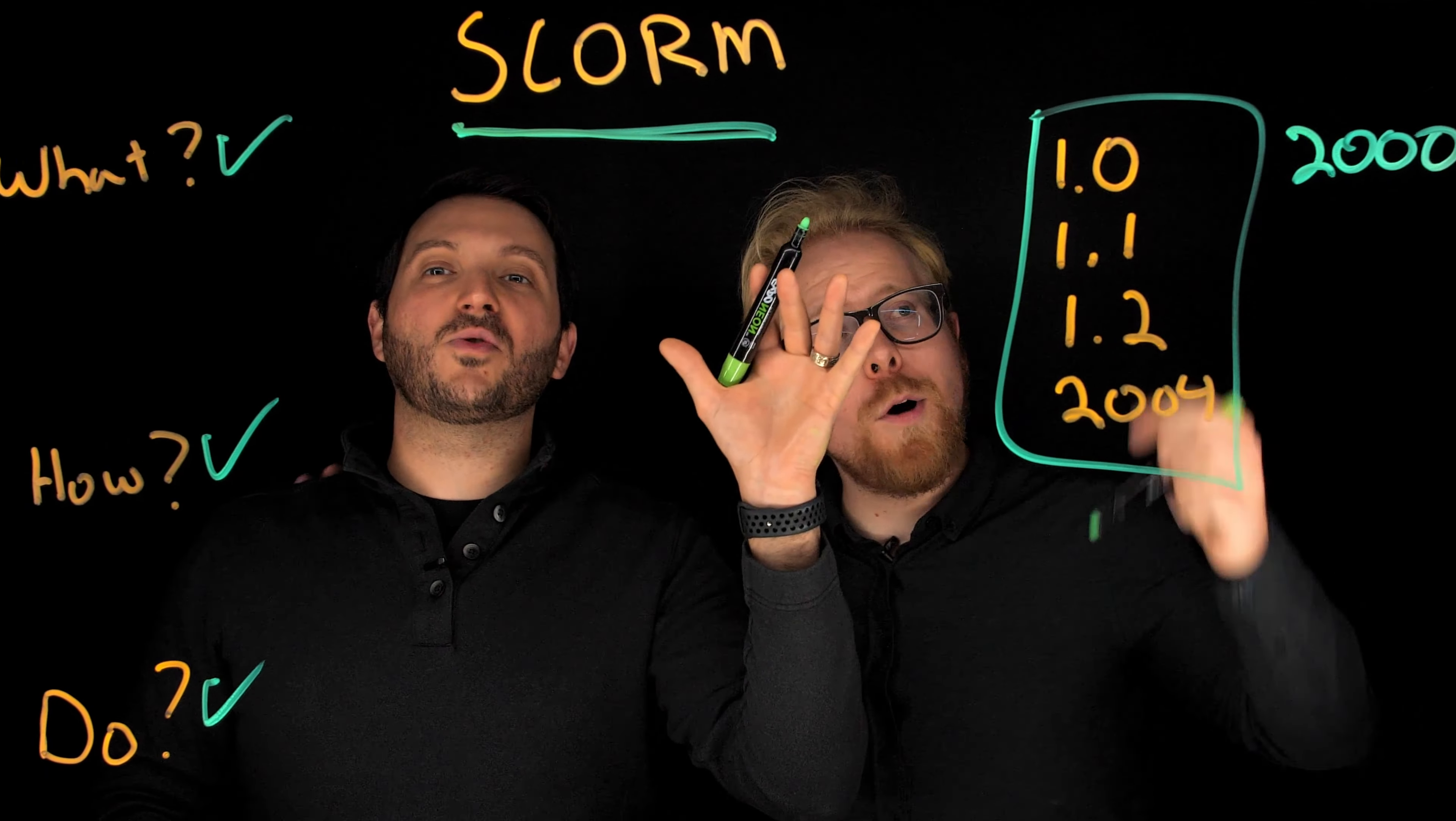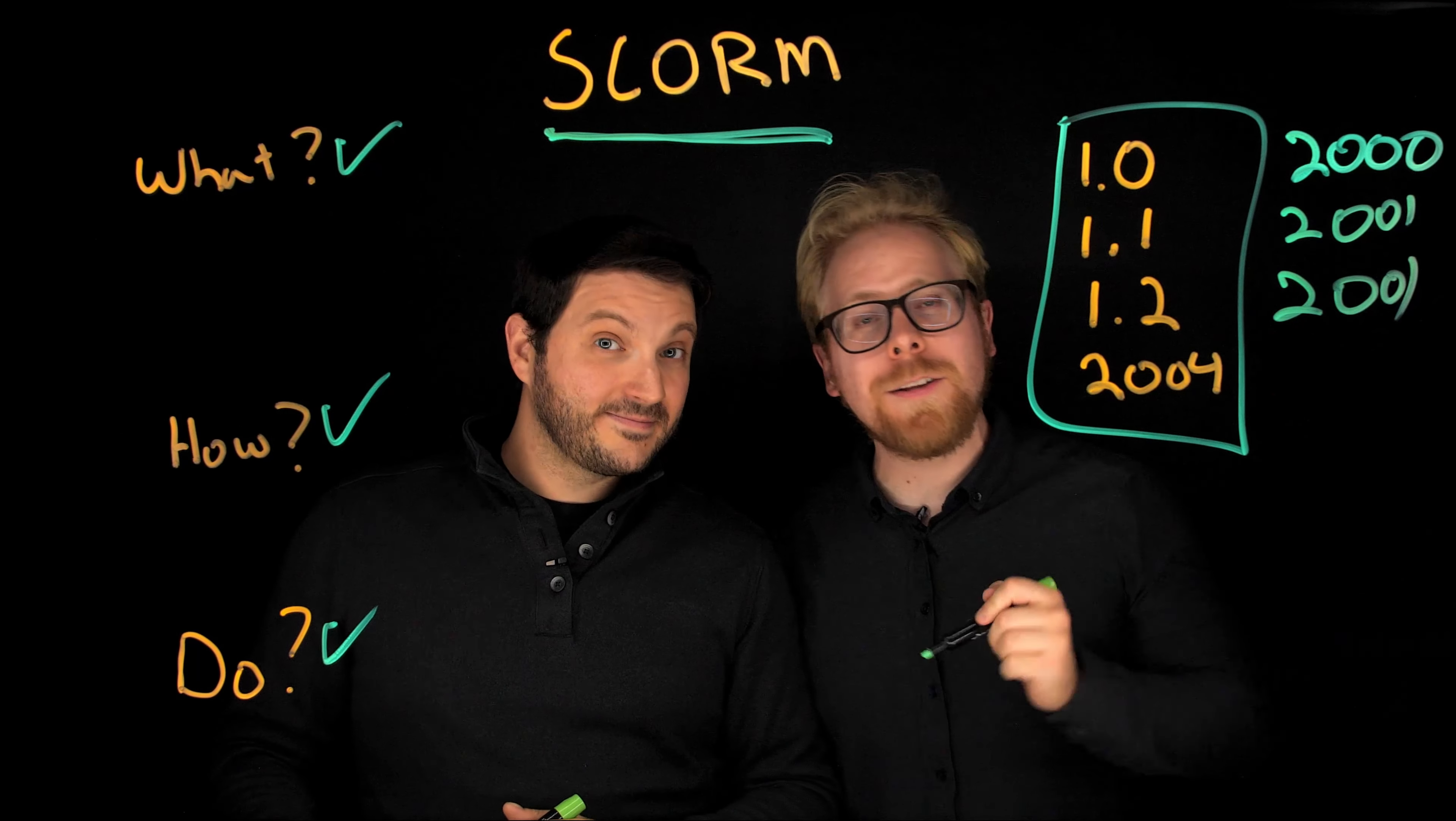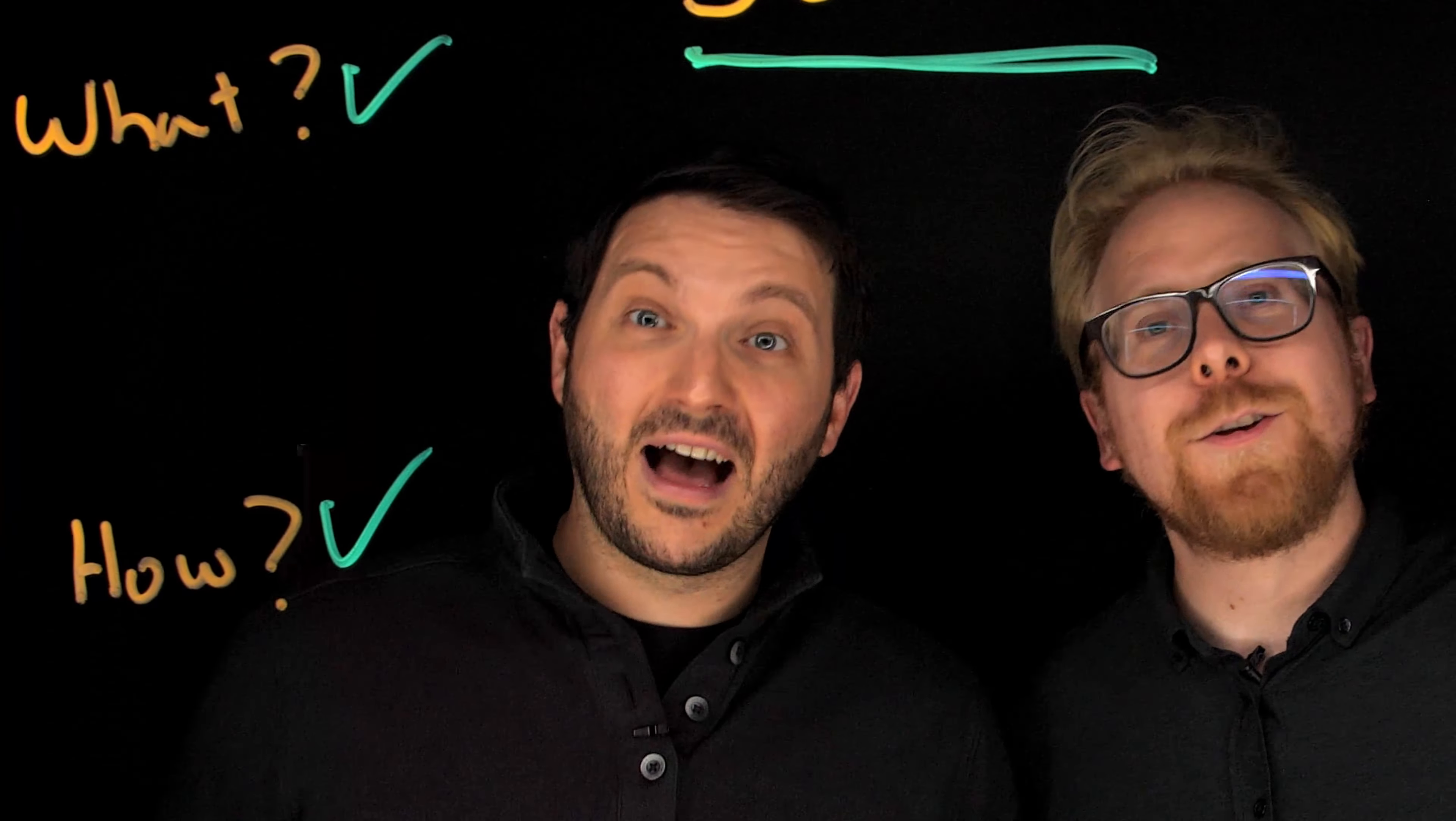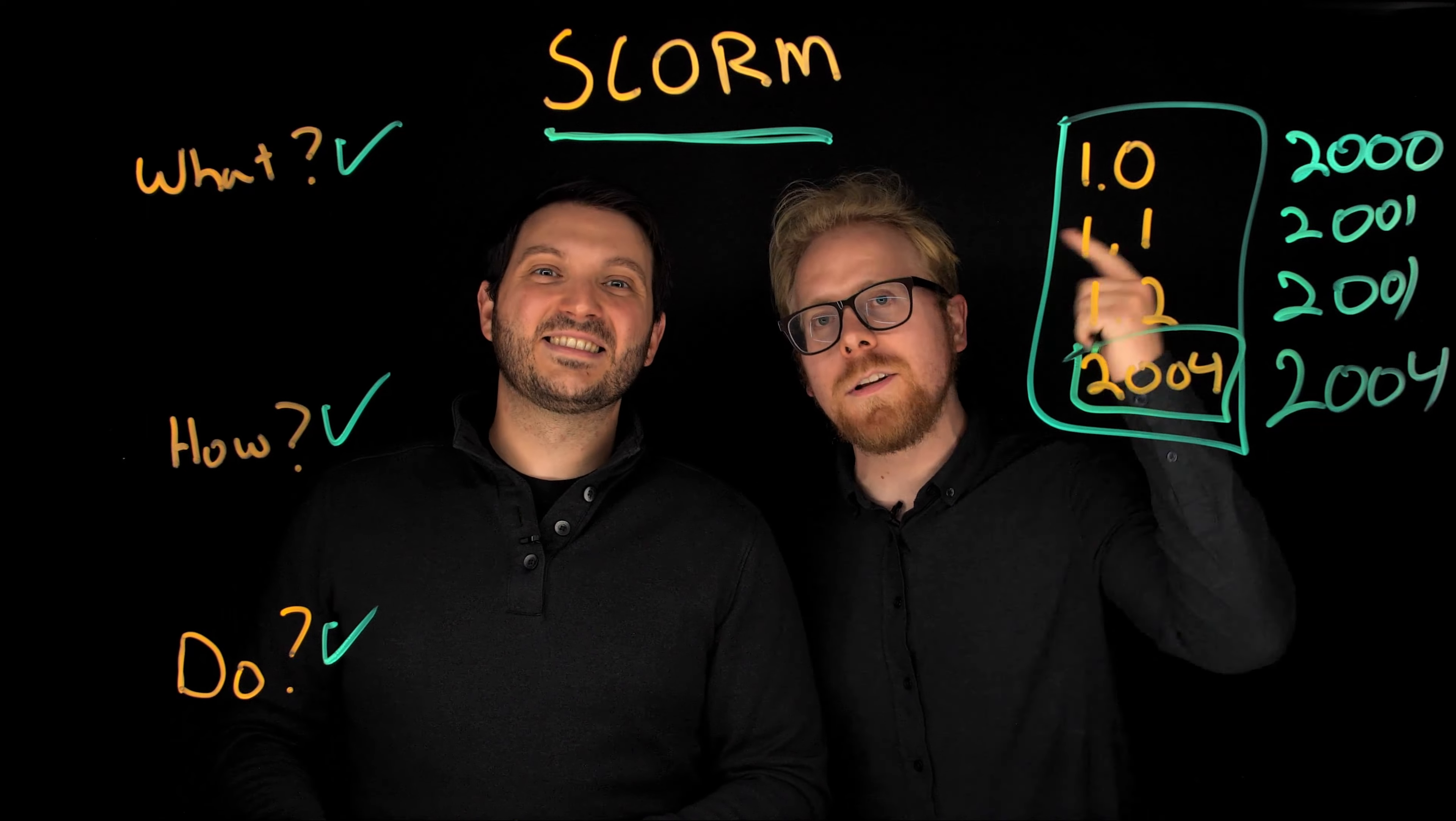1.1 was created in January 2001. And then they created 1.2 six months later. And then in 2004, they're like, this isn't 1.3. This is going to be called SCORM 2004. And that is the SCORM packaging compliance file type that we are using today.